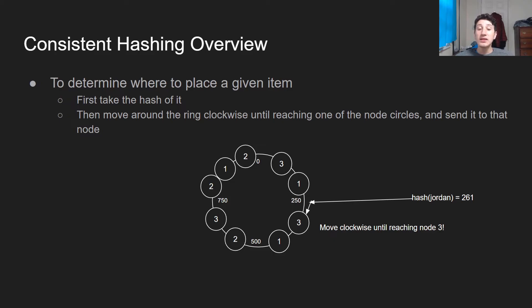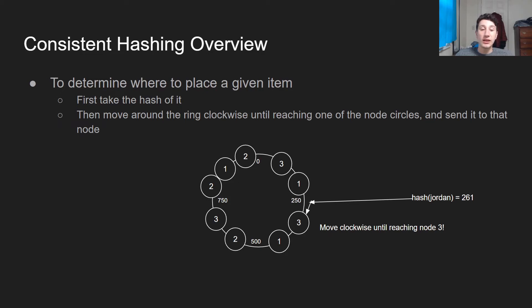As you can see, this is a pretty constant time operation in terms of figuring out where each key is going to be placed. And assuming we have the right number of virtual nodes or replicated circles per node, it'll make sure that generally speaking the load balance is relatively even per node. If I were to remove a node, since you're removing all of those virtual copies of it, even the rebalancing on a removal should be relatively even too.